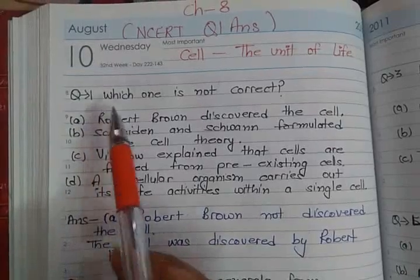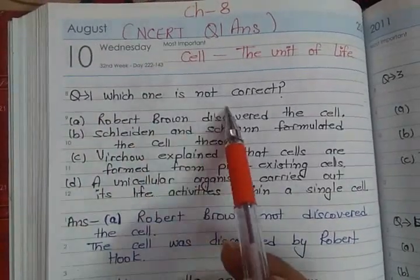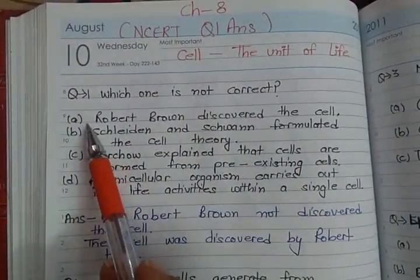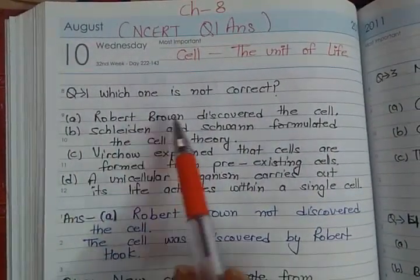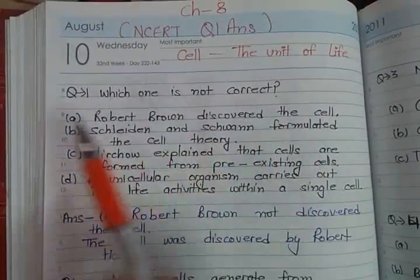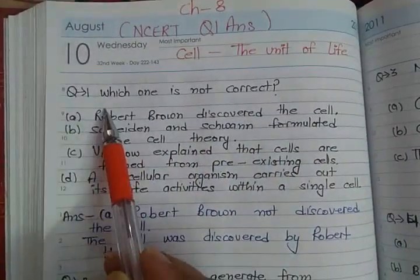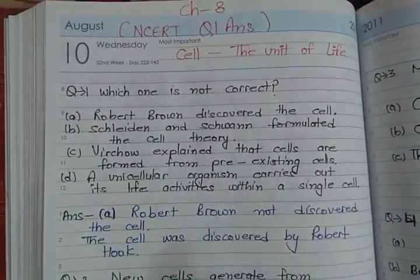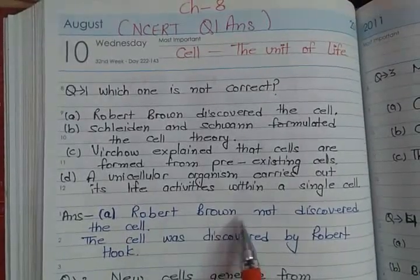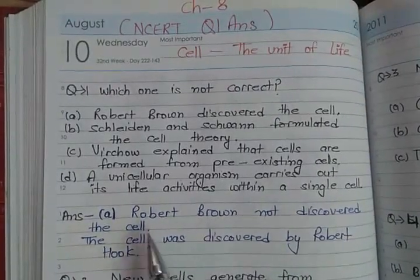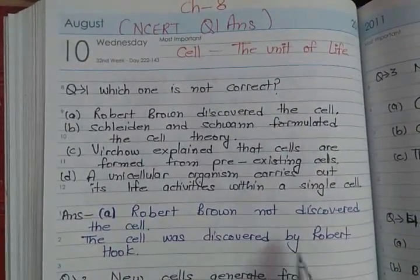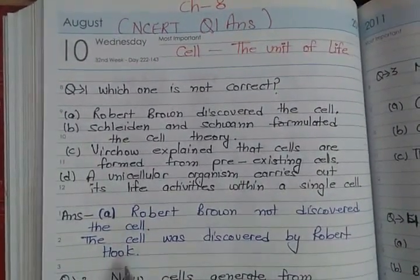Question 1: Which one is not correct? Answer is A. Robert Brown discovered the cell. Option A is not correct because Robert Brown did not discover the cell — the cell was discovered by Robert Hooke.